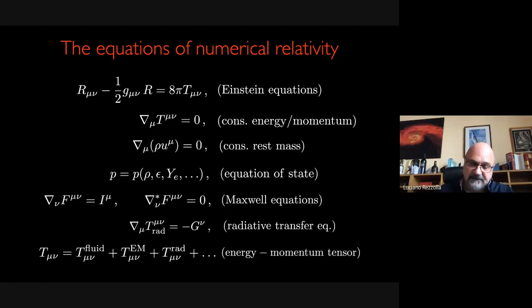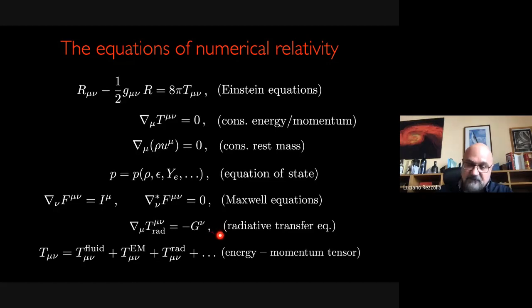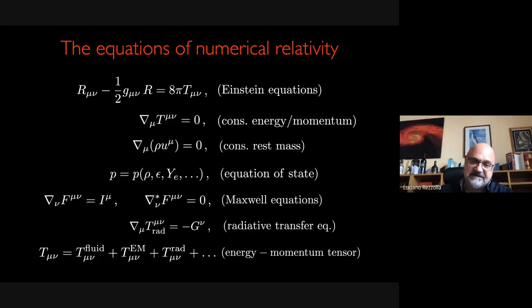On top of this, there are other equations we need to solve. If there are electromagnetic fields, then you need to add conservation laws for those — the Maxwell equations, again in a general relativistic context. If you have radiative transfer, if part of your energy is lost through radiation, then you will need an additional equation. This is the equation we want to solve and have solved in a special relativistic context. Daniele and Alessandro have already discussed how you do this in a special relativistic context with LB methods. At the end of the day, our energy-momentum tensor must be seen as a linear combination of all the components: a fluid component, an electromagnetic component if you are doing MHD, a neutrino component, and possibly a scalar field.